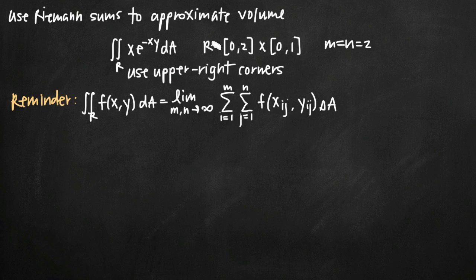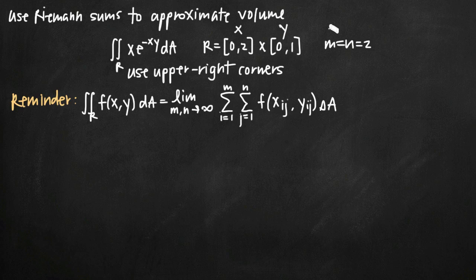When you've been given a region like this, r equals these intervals, you're going to have an x interval by a y interval — always x first and then y second. We've also been told that m equals n equals 2, which means we're dividing our rectangle into two rectangles across by two rectangles tall. m is the number of rectangles dividing the x interval and n divides the y interval. We've also been told to use upper right-hand corners.